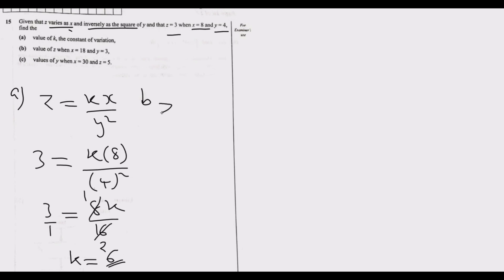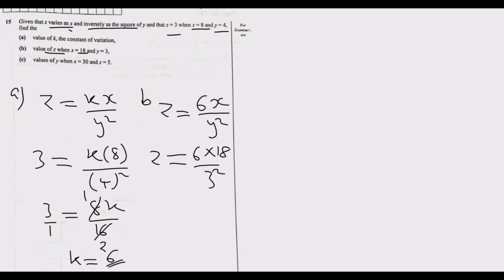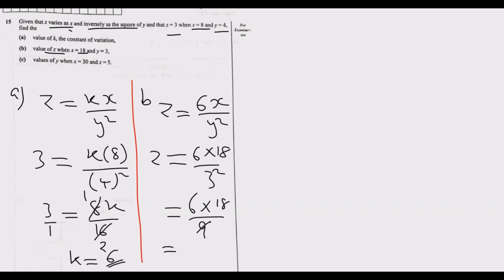Using our formula z = 6x / y², we substitute x = 18 and y = 3. So z = 6 × 18 / (3 × 3) = 6 × 18 / 9. Since 9 into 9 is 1 and 9 into 18 is 2, we get 2 × 6 = 12. Therefore z equals 12.